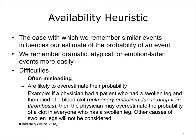Another cognitive heuristic is the availability heuristic, which states that our estimate of the probability of an event is influenced by the ease with which we remember similar events. We remember dynamic, atypical, or emotion-laden events more easily. This is often misleading, causing us to overestimate probabilities. For example, if a physician saw a patient with a swollen leg who then died of a pulmonary embolism due to deep vein thrombosis, that physician may overestimate the probability of a clot in everyone who has a swollen leg, failing to consider other causes.